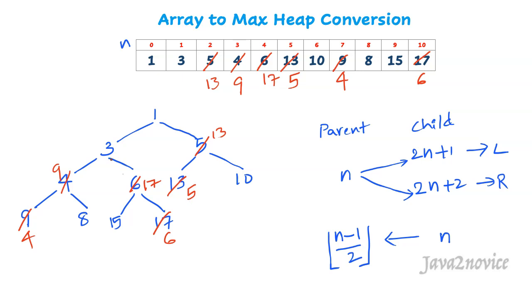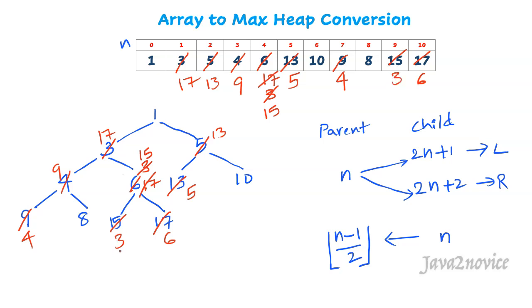Let's move to the next node. Node value 3 is smaller than its children 9 and 17. 17 is the highest, so we swap: 17 goes up and 3 goes down. We apply this in the array as well. Now in this subtree, 3 is again a parent and its value is less than its children 15 and 6. 15 is the highest, so we swap: 15 goes up and 3 goes down. We apply this in the array as well. Since 3 is now at a leaf node, we cannot proceed further and stop here.